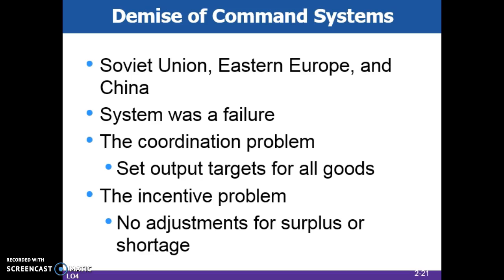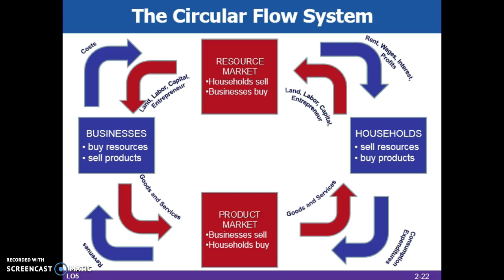There were no price signals to indicate more or less of a product was desired, resulting in surpluses and shortages on a regular basis. To illustrate why the market system succeeded while the command economy failed, we look to the circular flow system. The circular flow model is a simplified dynamic economy of continuous flows.